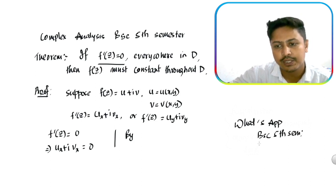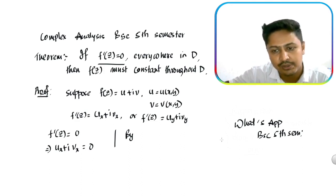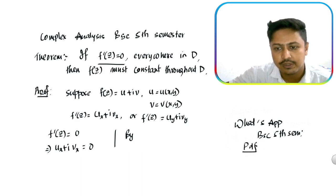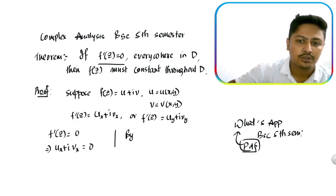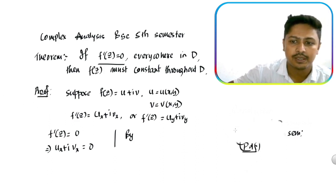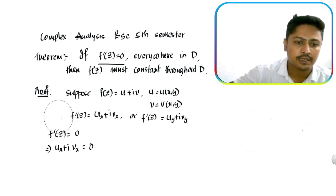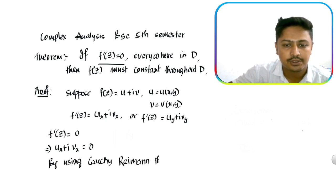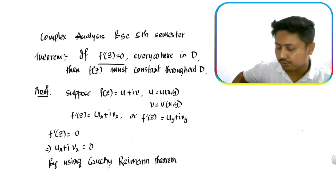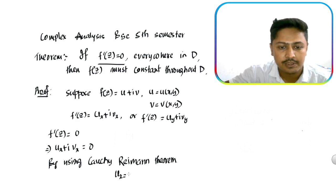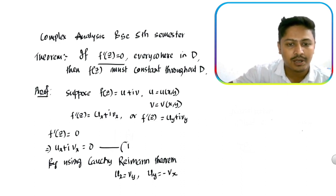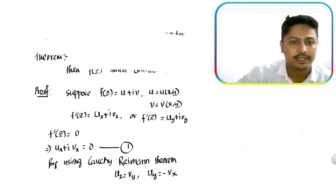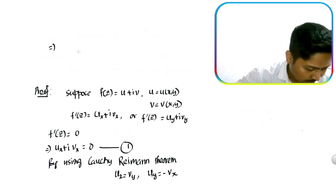So you can collect the PDF. Let's continue to prove this theorem. By using the Cauchy-Riemann theorem, you can say — by using the Cauchy-Riemann theorem — ux equal to vy and uy equal to minus vx. So by using this Cauchy-Riemann theorem, here equation number one will belong.